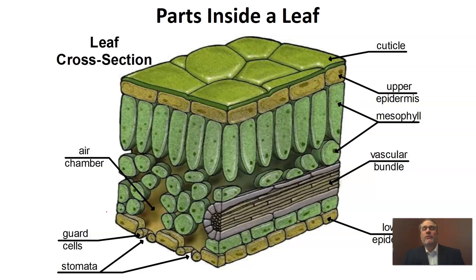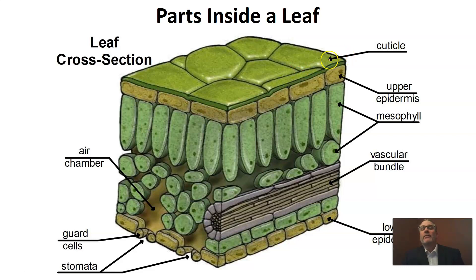Inside of a leaf, here's a leaf cross-section — this is looking at the blade of a leaf that's been cut from the edge on. We've got about seven different parts to pay attention to, and I'm going to start at the top and name them. That very thin coating at the top is called the cuticle. Underneath that, we have square flat rectangular cells — this is an entire layer of cells that we call the upper epidermis.